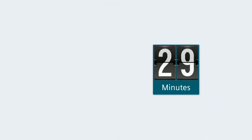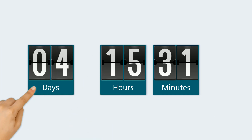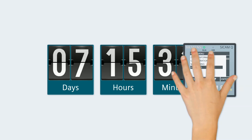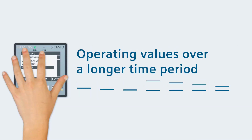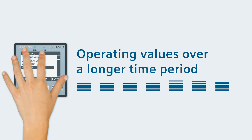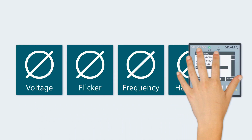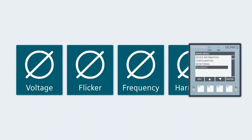Power quality is not a matter of seconds. Power quality is a matter of minutes, of hours, or even of days. Because for a reliable power quality evaluation, you need precisely acquired operating values over a longer time period, from which the CCAM power quality device can calculate significant mean values.